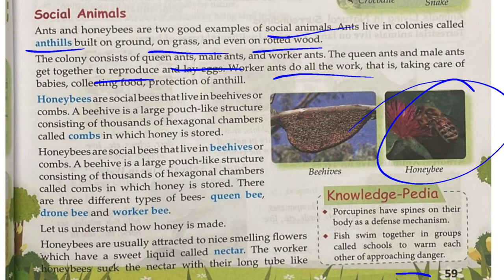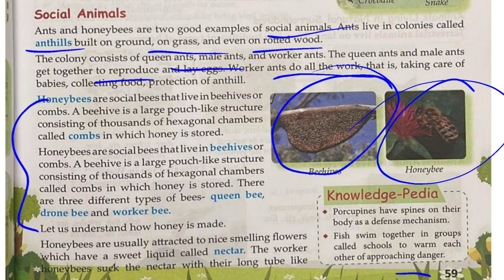Honey bees are social bees that live in beehives. A beehive is a large pouch-like structure consisting of thousands of hexagonal chambers called combs, in which honey is stored. There are three different types of bees: queen bee, drone bee, and worker bee. Worker bees do the work, drone bees fly, and the queen bee handles reproduction.